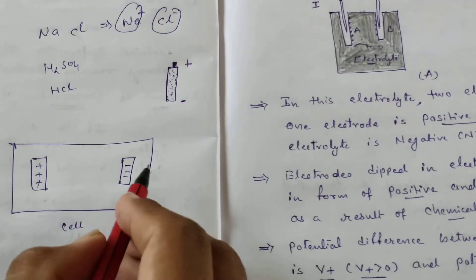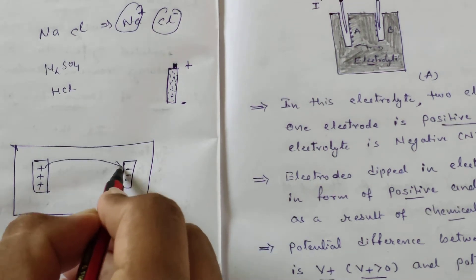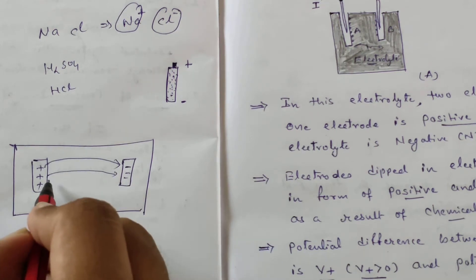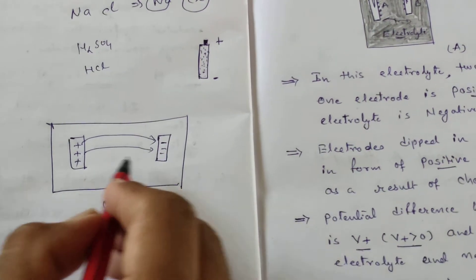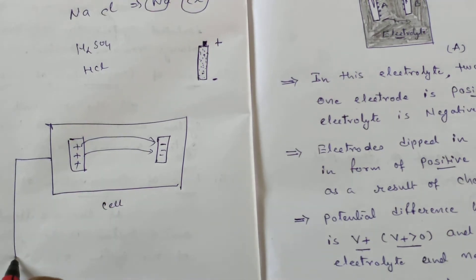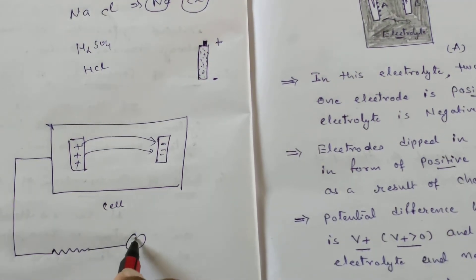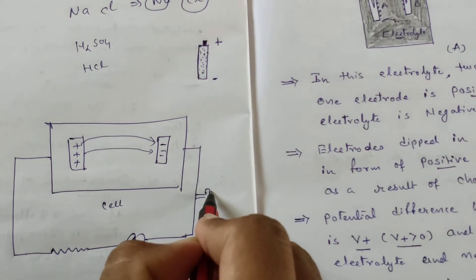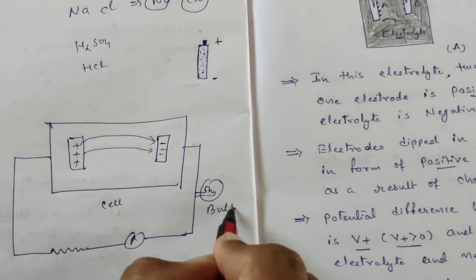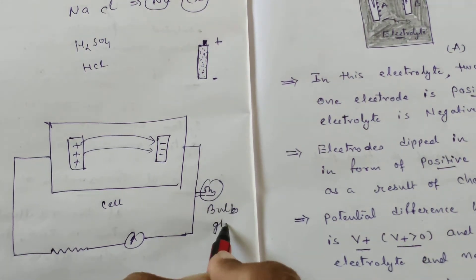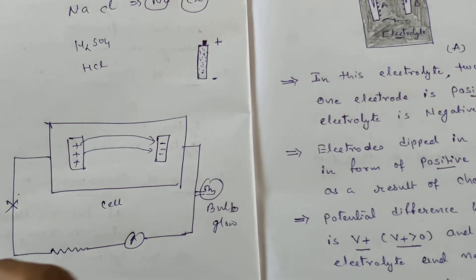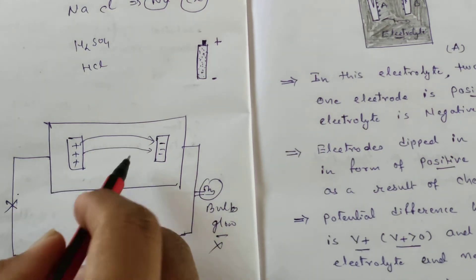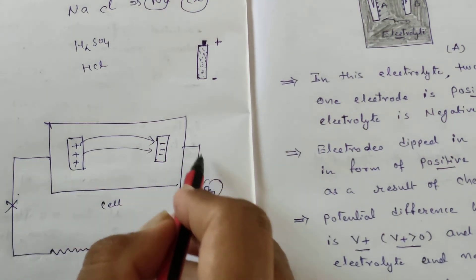Now the question is: why do positive charges not directly reach from the positive terminal to the negative terminal? Instead they move through external parameters. If we connect an external circuit with a simple bulb placed there, the bulb will start to glow. As we break the circuit, the bulb will stop glowing. So charges flow from positive to negative through the external circuit.